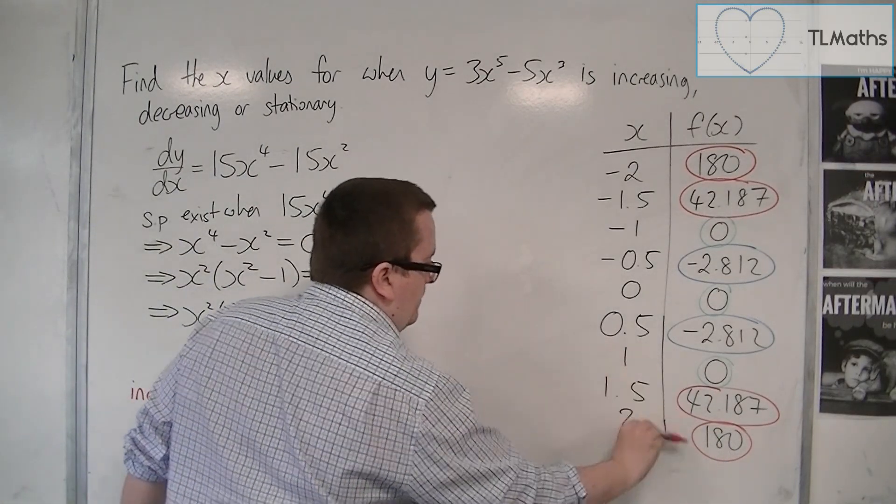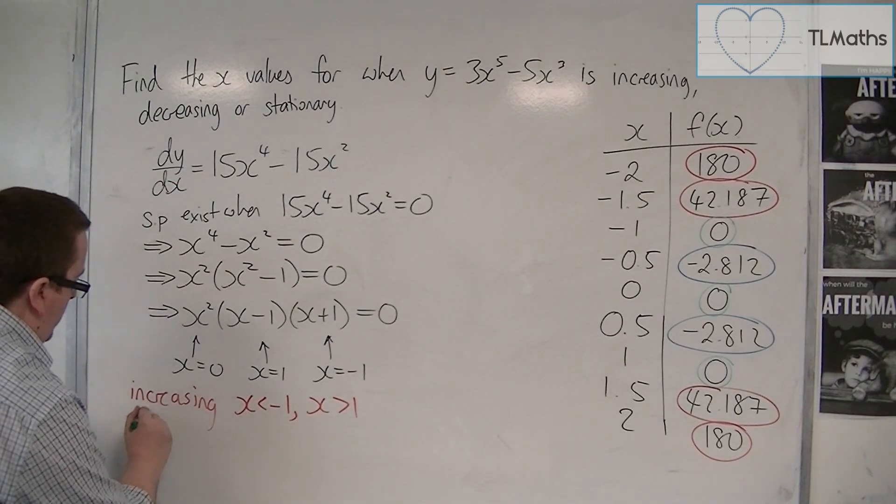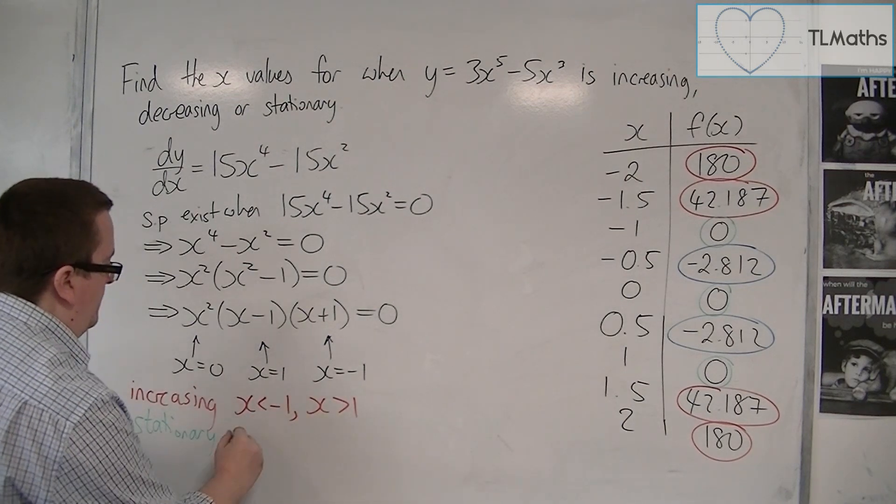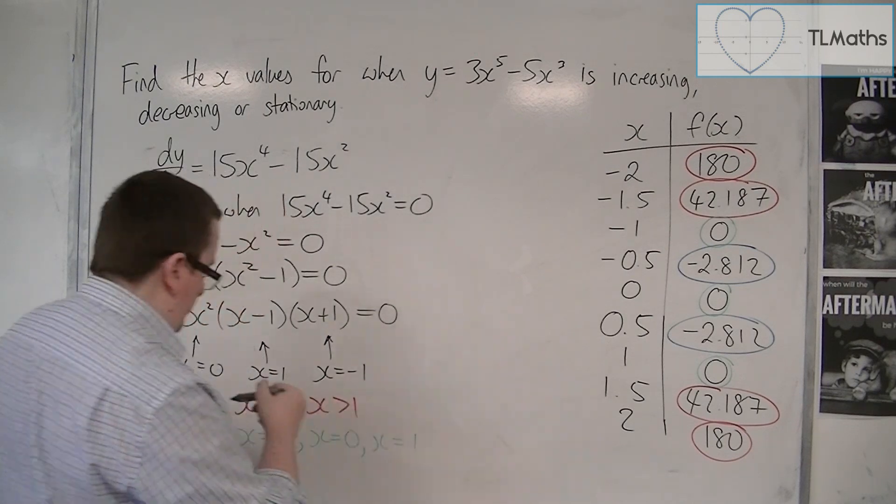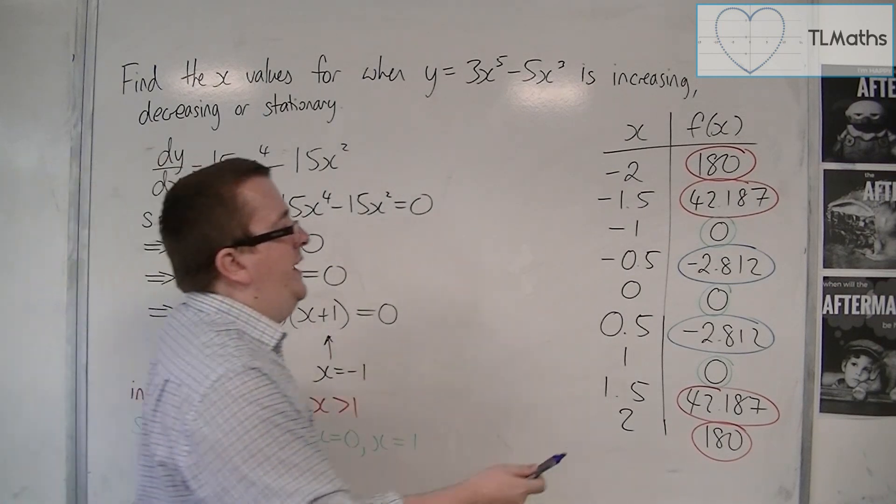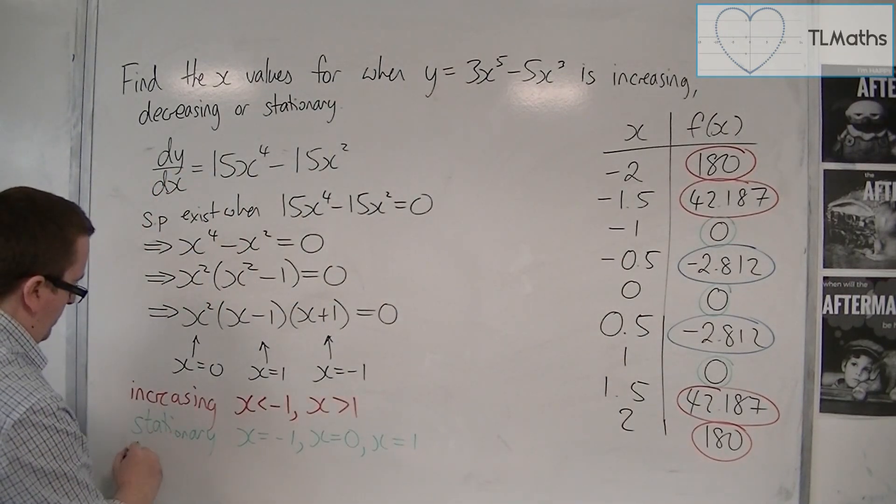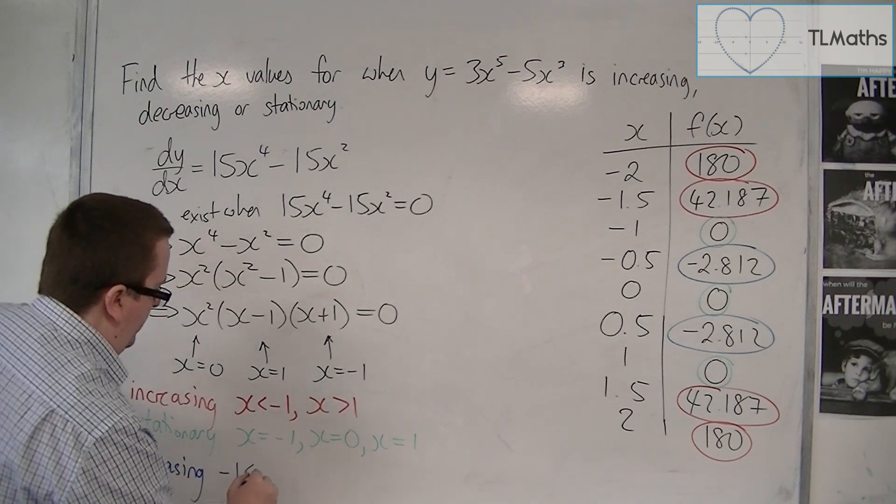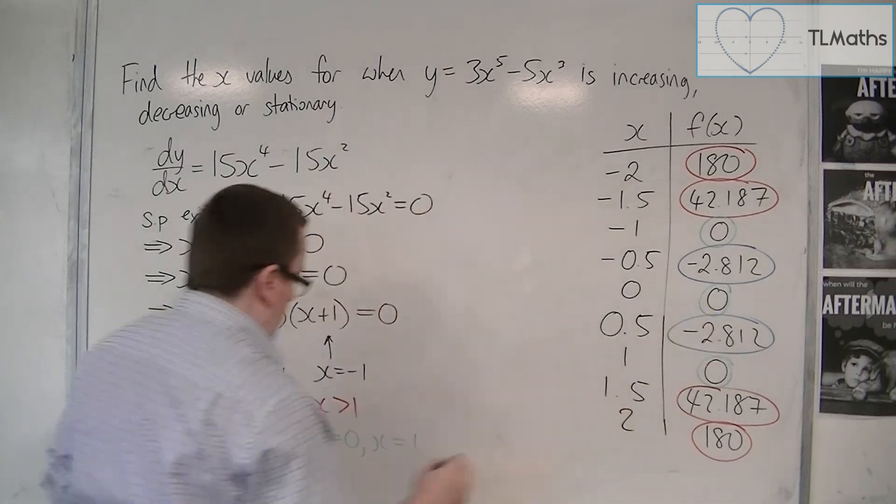From that point onwards, we are stationary. These are the stationary points that we found, so at x is minus 1, x is 0, and x is 1. And we are decreasing between minus 1 and 0, so decreasing between minus 1 and 0, and between 0 and 1.